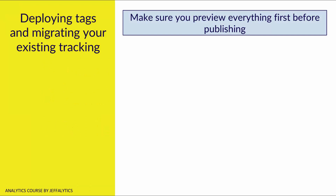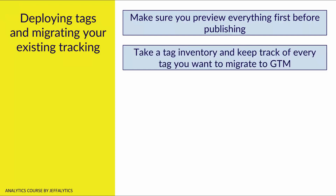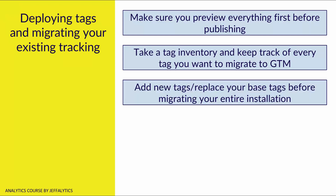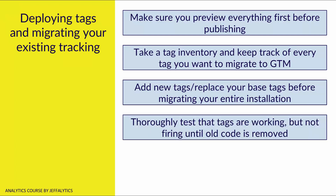So what are the steps to deploying tags and migrating your existing tracking? You want to make sure that you preview everything first before you publish. You want to take a tag inventory and keep track of every tag you want to migrate to GTM. You want to add new tags and replace your base tags before migrating your entire installation. And you want to thoroughly test that your tags are working, but you don't want to fire your tags for all users until the old code is removed.